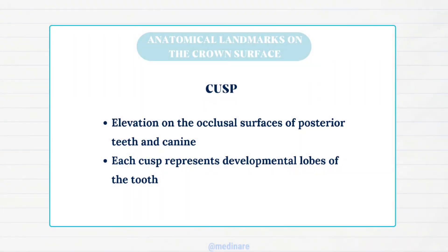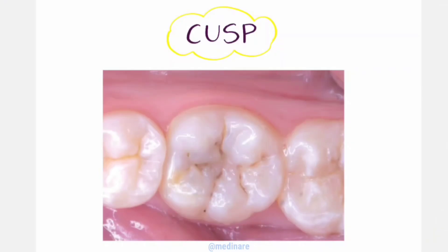A cusp is an elevation on the occlusal surface of the posterior teeth and canine. Each cusp represents developmental lobes of that tooth. It contributes to a significant portion of the tooth surface and divides the occlusal surface of the posterior teeth. In this molar we have five cusps totally, present on the occlusal surface.